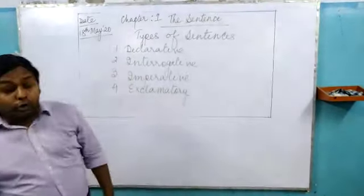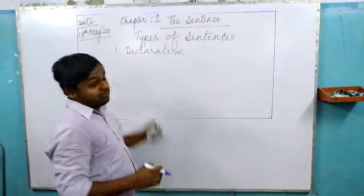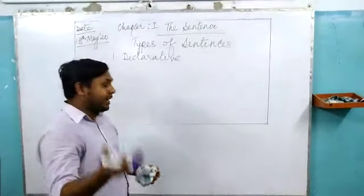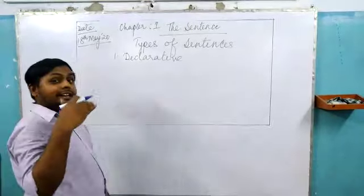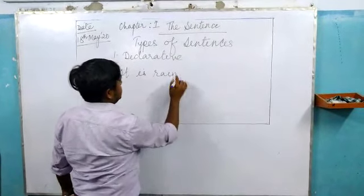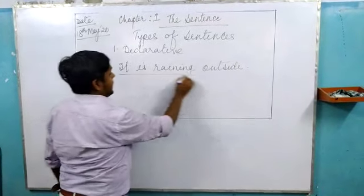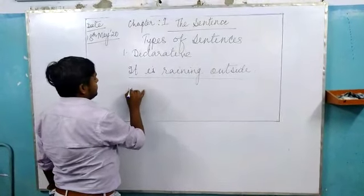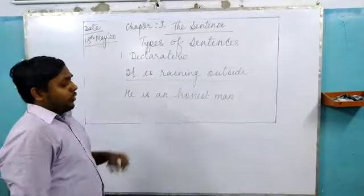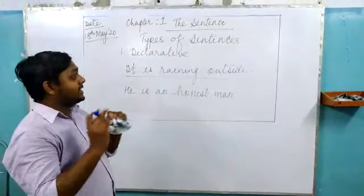First one: declarative. What is the meaning of a declarative sentence? A declarative sentence is also called a statement or assertive sentence. A declarative sentence means when we declare or when we state anything — anything that is stated by anyone. That is called declarative. Declarative means to declare something.